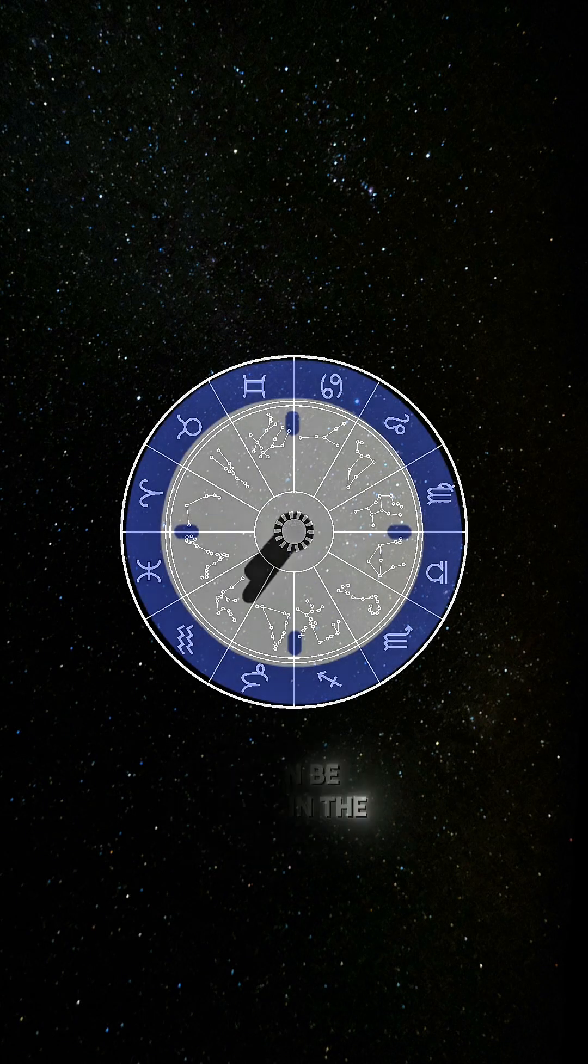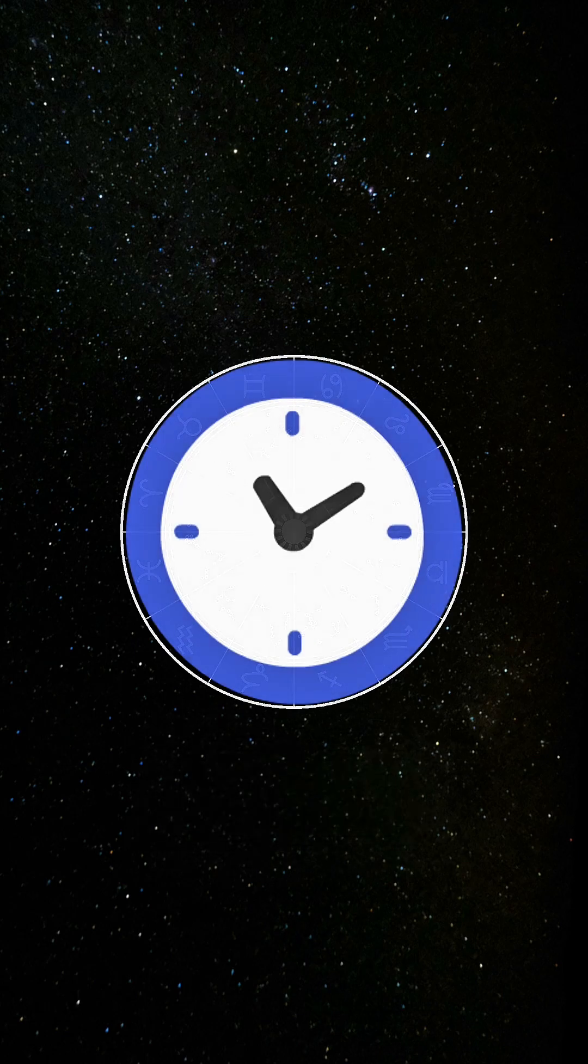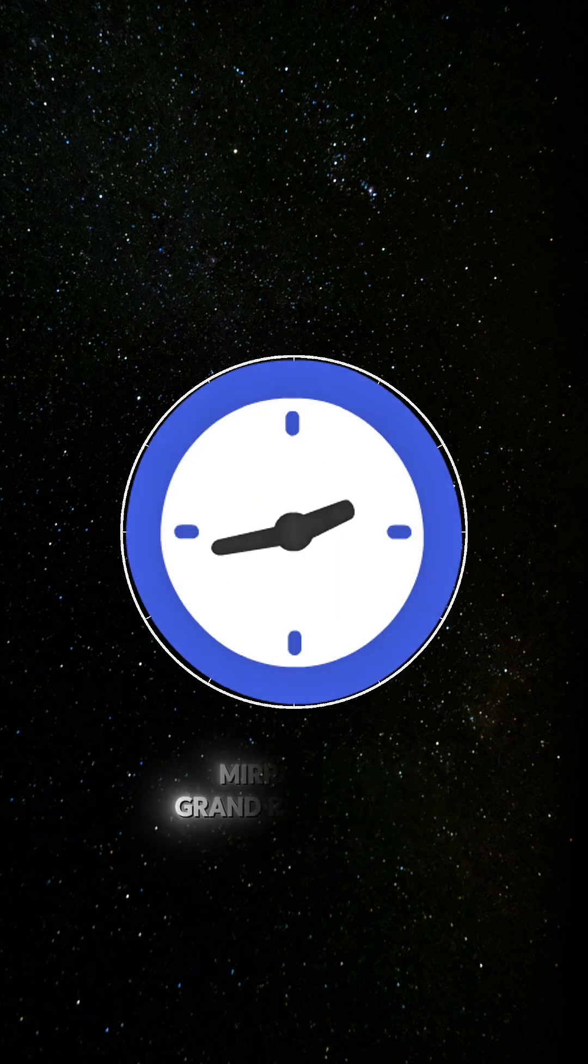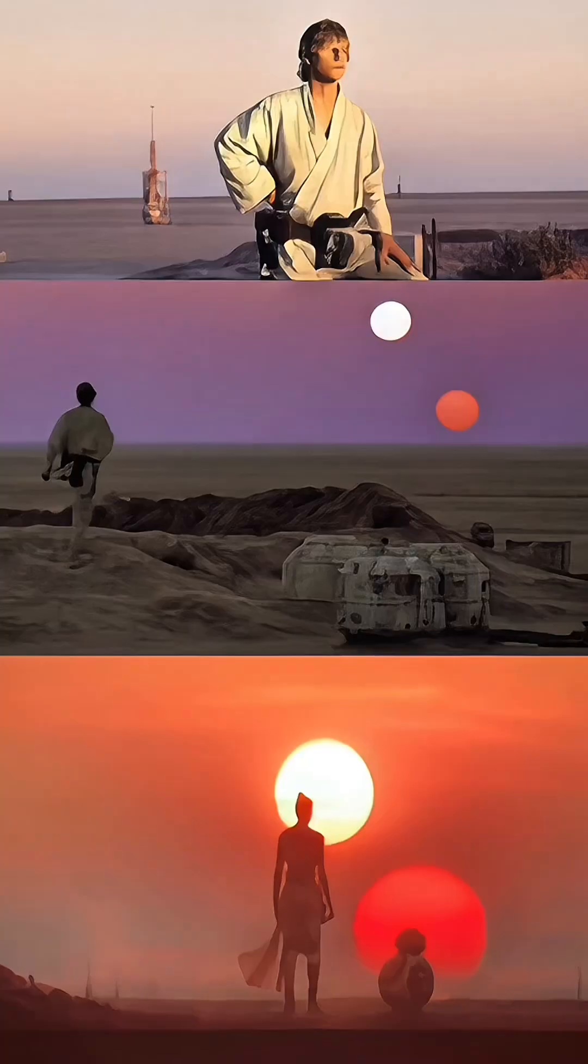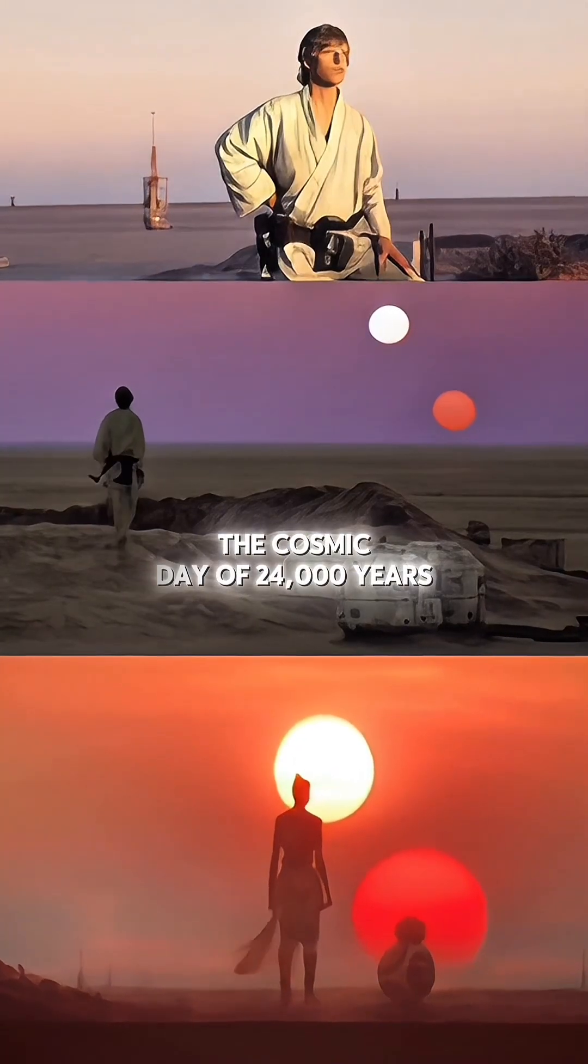this same principle can be seen in the structure of our daily lives. The 24 hours of the day mirror the grand rhythm of the greater cosmic cycle, the cosmic day of 24,000 years.